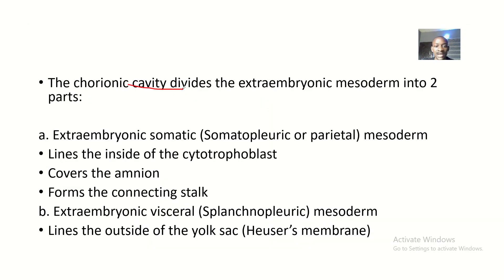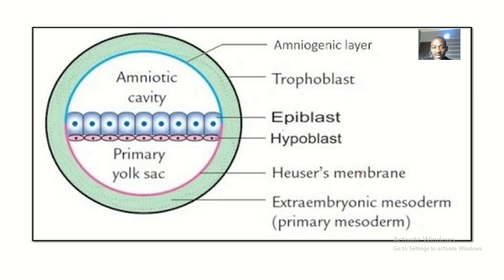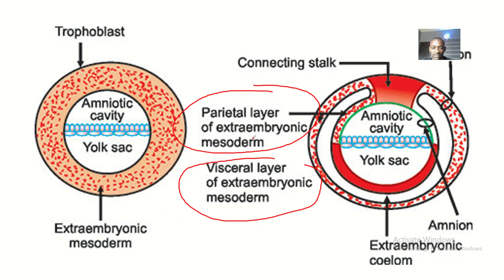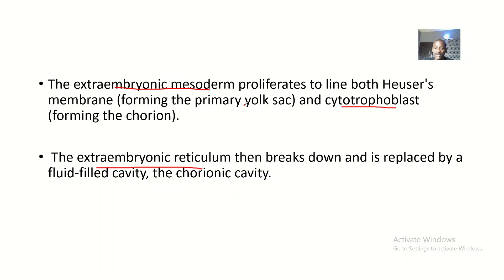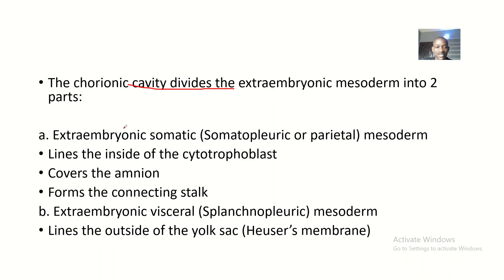So the chorionic cavity divides the extra embryonic mesoderm into two parts. You can see this is the extra embryonic mesoderm, and you can see how the cavity is dividing the extra embryonic mesoderm into two parts. From here you can see that the parietal layer is the one inside.